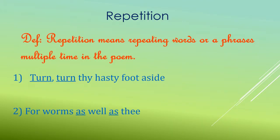The first figure of speech is repetition — repeating a word or phrase multiple times in the poem for poetic effect. For example, 'Turn, turn thy hasty foot aside' — the word 'turn' is repeated twice. Another example is 'for worms as well as thee,' where the word 'as' is repeated twice for better poetic effect.